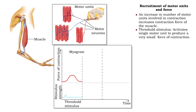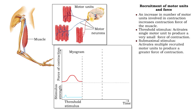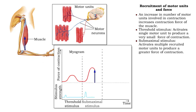When a stronger stimulus is applied to the muscle, more motor units are activated simultaneously. These additional motor units are said to be recruited, and the increased tension results in a stronger contraction of the whole muscle.